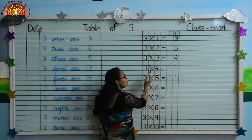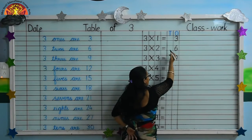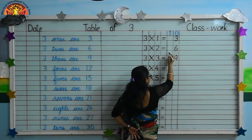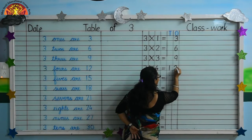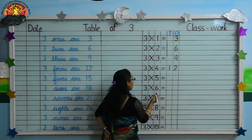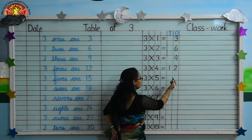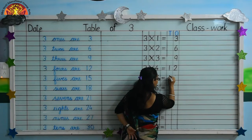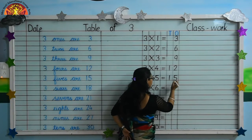Three fours are twelve. Write one at the place of tens and two at the place of ones — twelve. Next is three fives are fifteen — write one, five — fifteen.